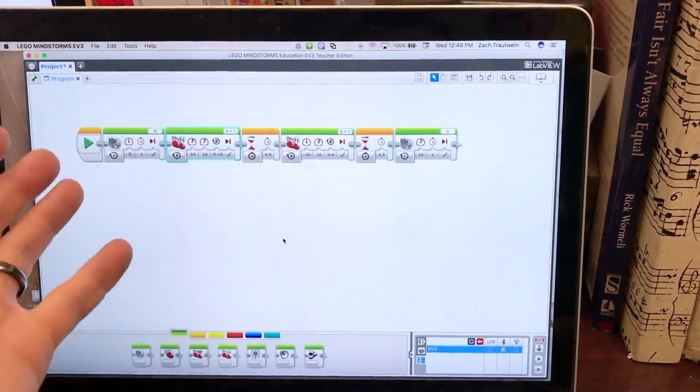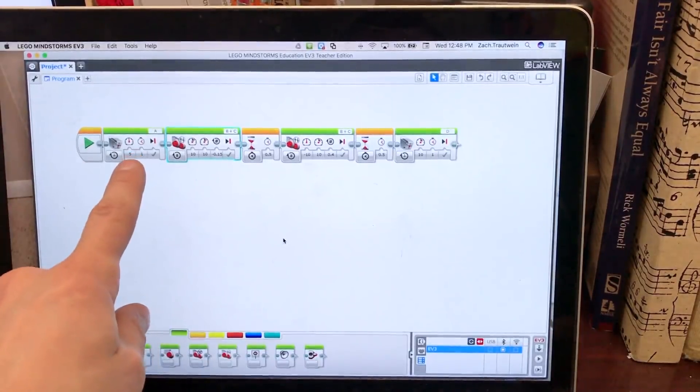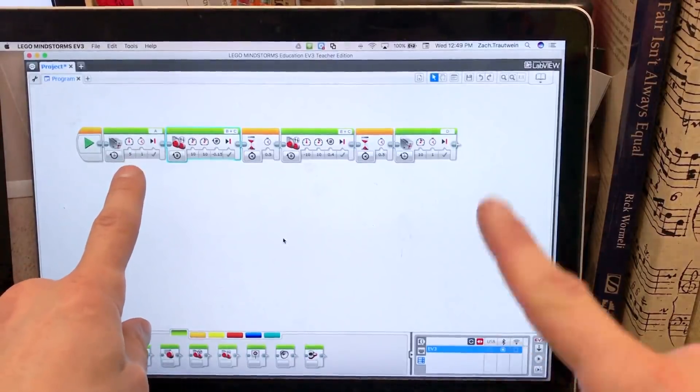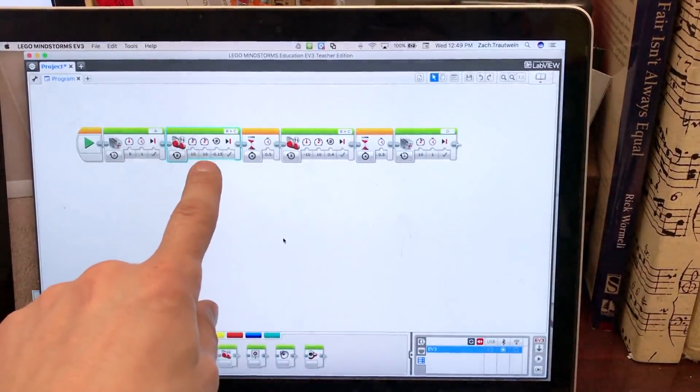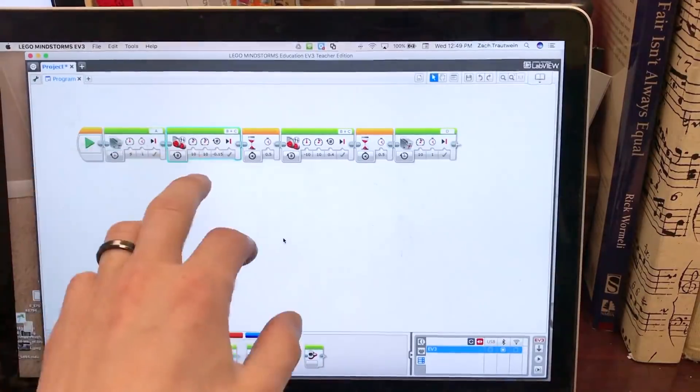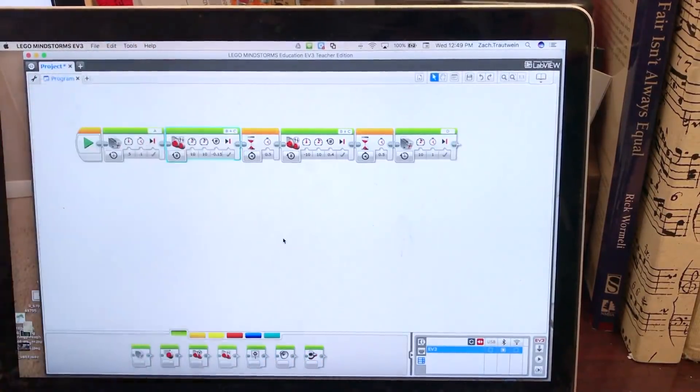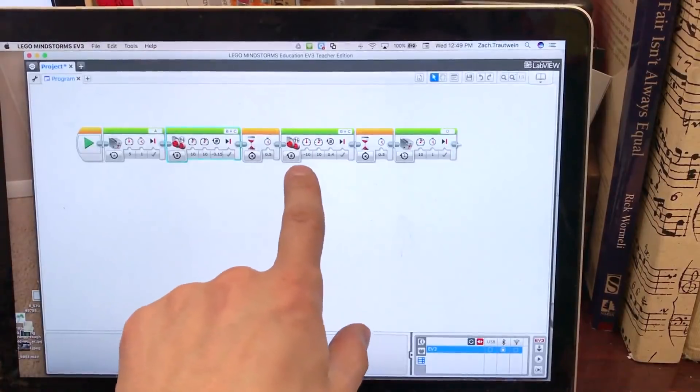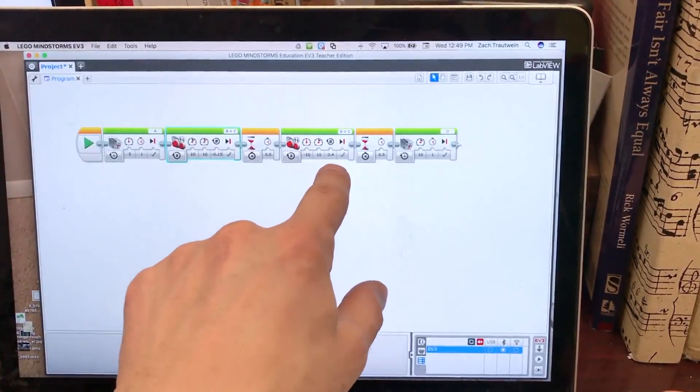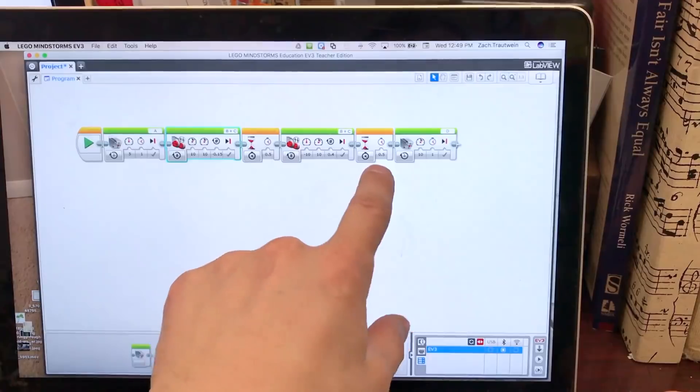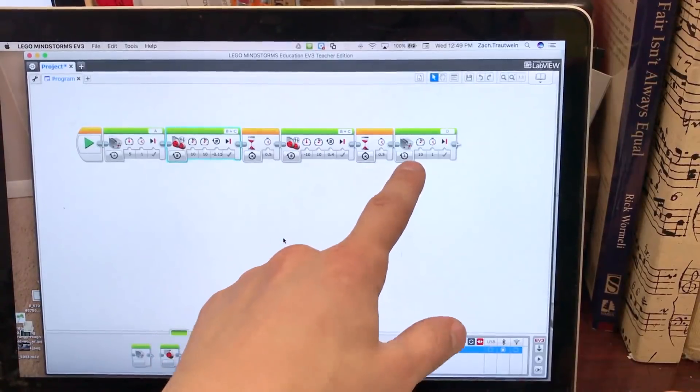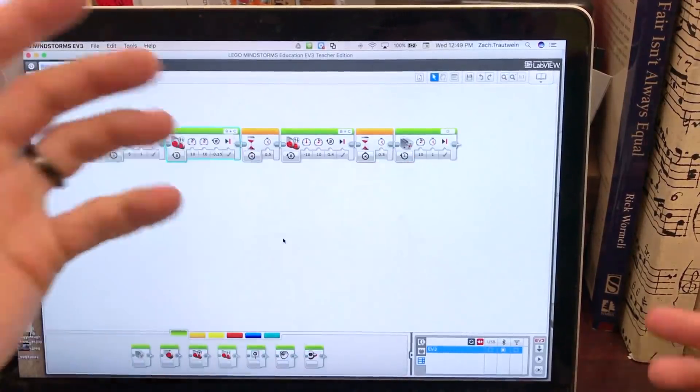I said that I wrote a simple program. This is it. This is just the front attachment going up. This is coming backwards just fifteen hundredths of a rotation. This is waiting five seconds because robots like to think, and this is turning 90 degrees, waiting another point five seconds and then dropping the pipe in. That's it, it's that simple.